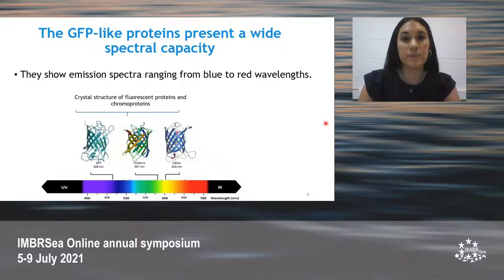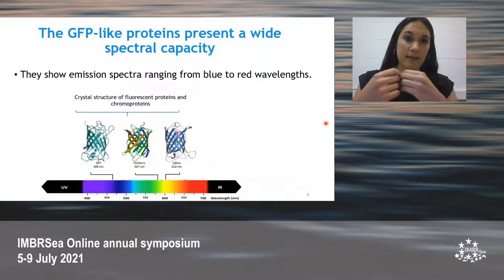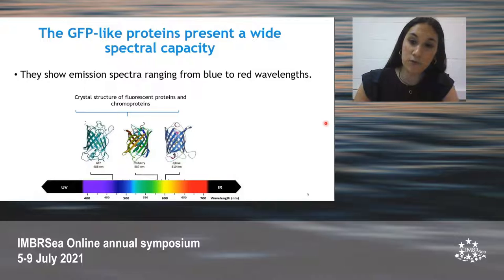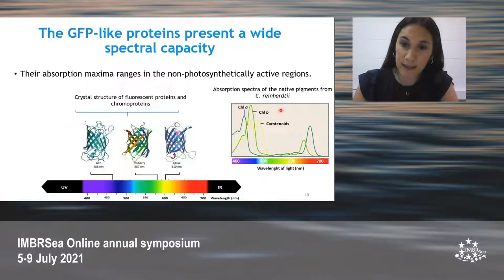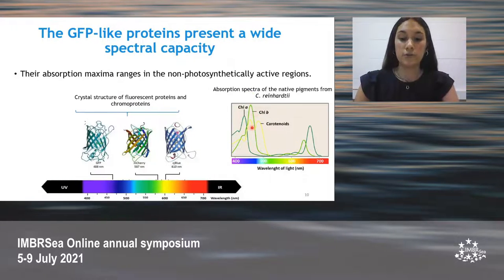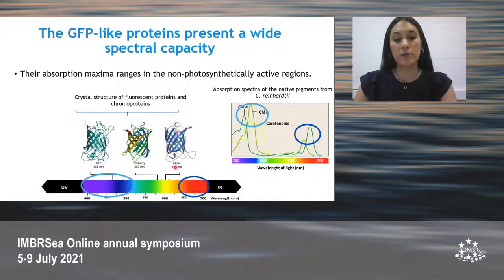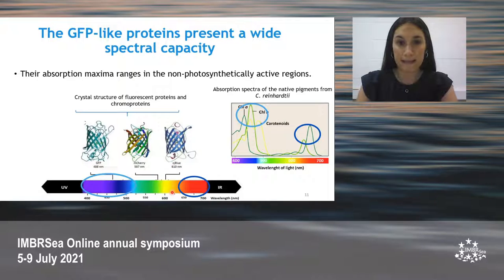And very importantly, these proteins present a very diverse light energy absorption and emission spectra that is known to be different from the ones observed for the native pigments of some photosynthetic organisms, such as the chlorophylls and the carotenoids, due to the fact that their absorption maxima range in the non-photosynthetically active regions, which correspond to the green and the yellow regions of the visible light.